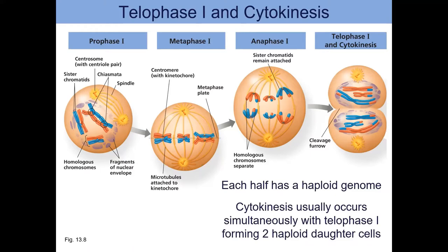Here is meiosis I all together. Notice the initial diagram has six chromosomes — three red maternal ones and three blue paternal ones. After meiosis I we have two cells, each with three chromosomes. So we go from diploid 2n=6 to haploid n=3. We still have the sister chromatids together, so we can do another division and everyone ends up with one haploid copy of the genome.